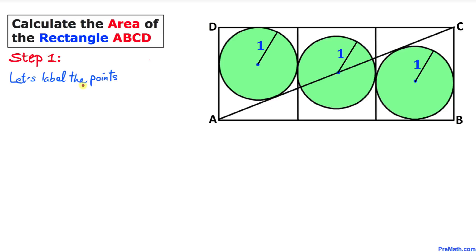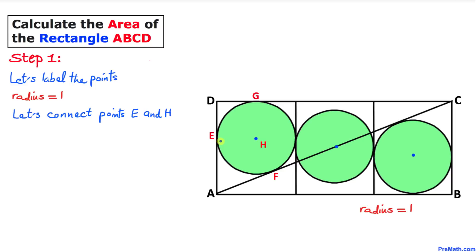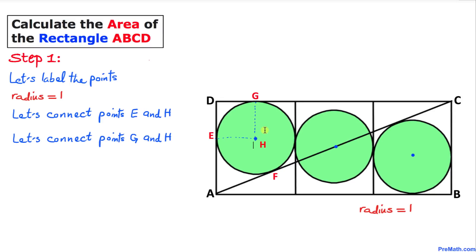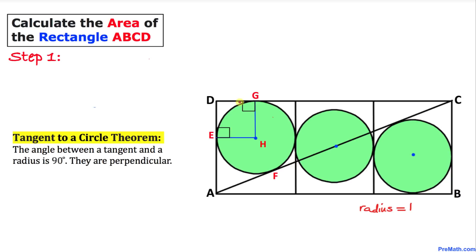Here's the very first step: let's label the points. Here's our new figure with the labeled points. Keep in mind that the radius for all these circles is one. Now let's go ahead and connect points E and H, and also connect points G and H.